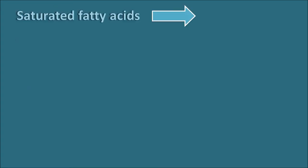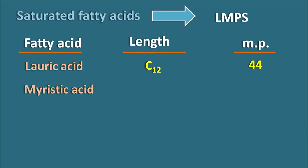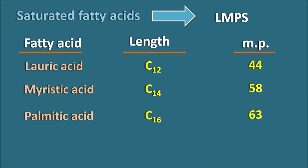The saturated fatty acids can be remembered as LMPS — lauric acid, myristic acid, palmitic acid, and stearic acid — in order of increasing chain length. Lauric acid is C12 with a melting point of 44°C; myristic acid is C14 with 58°C; palmitic acid is C16 with 63°C; and stearic acid is C18 with 69°C. With each addition of two carbons, the melting point increases, confirming that chain length raises the melting point.